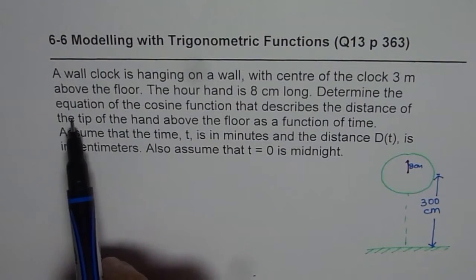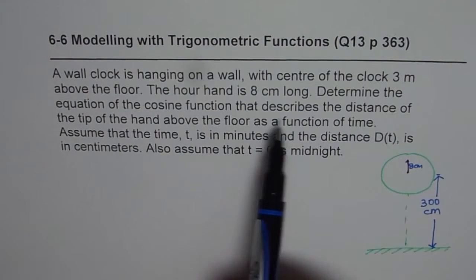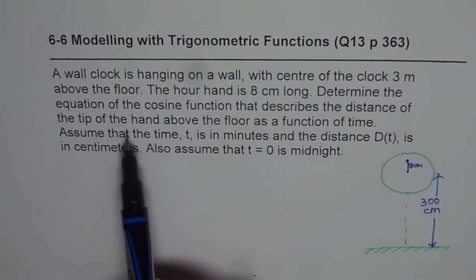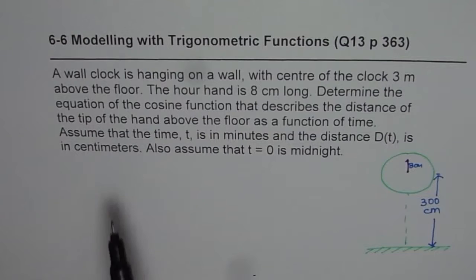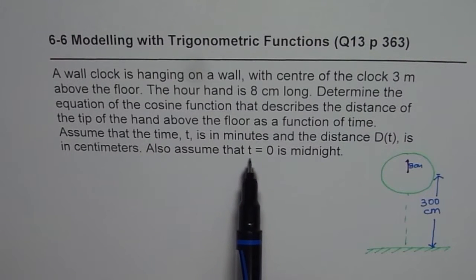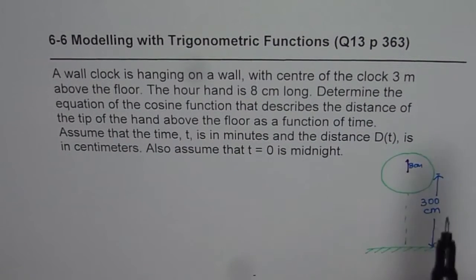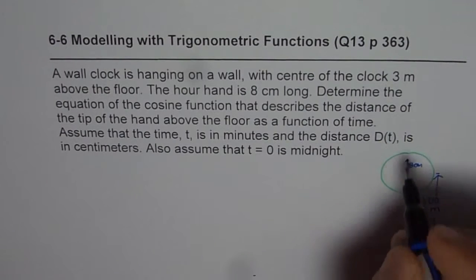Now we need to determine the equation of a cosine function that describes distance of the tip of the hand above the floor as a function of time. Now we are also assuming that t equals 0 is midnight. That means the hour hand is pointing at 12.